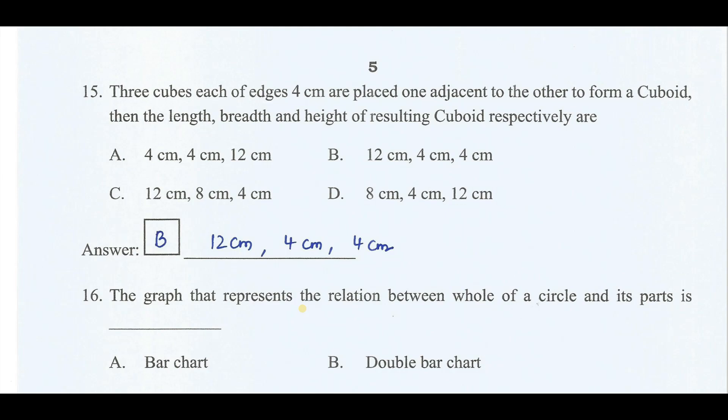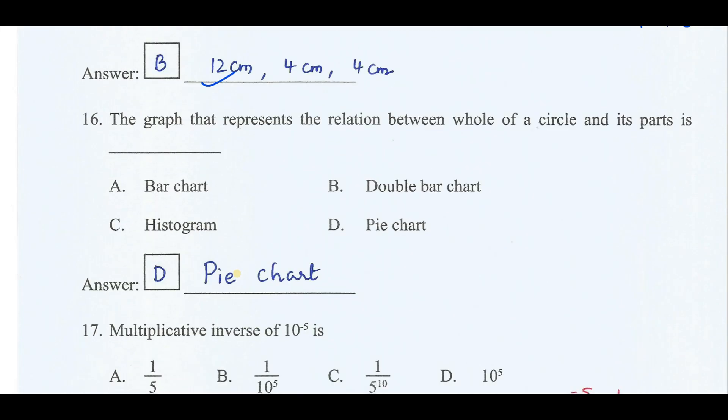Three cubes each of edge 4 cm are placed one adjacent to each other to form a cuboid. So the length becomes 12 cm, that is 4 plus 4 plus 4, which becomes 12 cm. Now the breadth and height will be same, that is 4 cm and 4 cm.